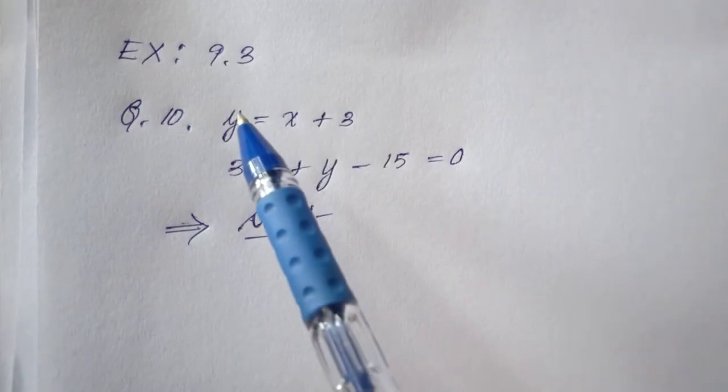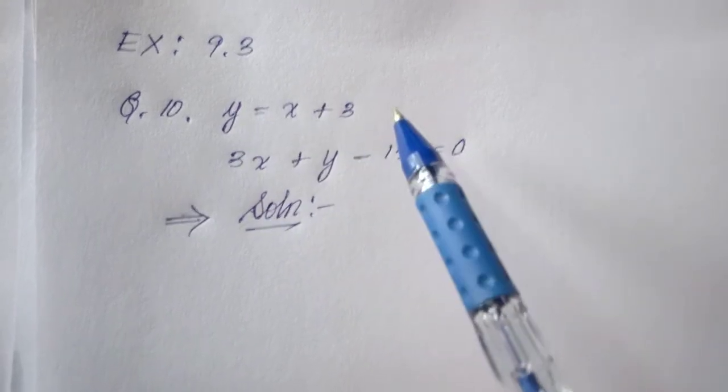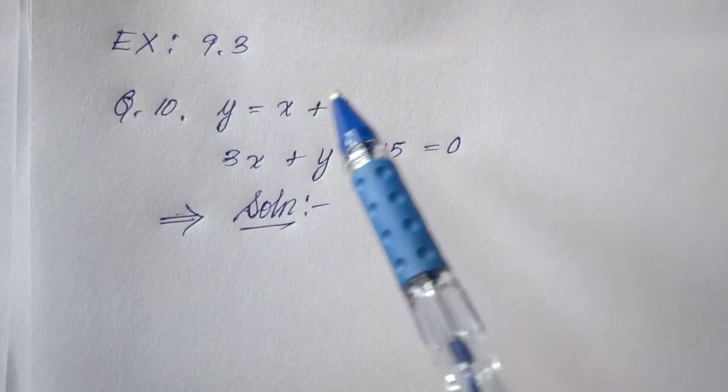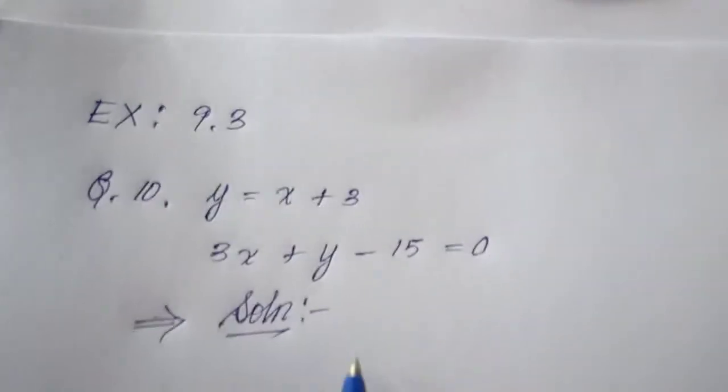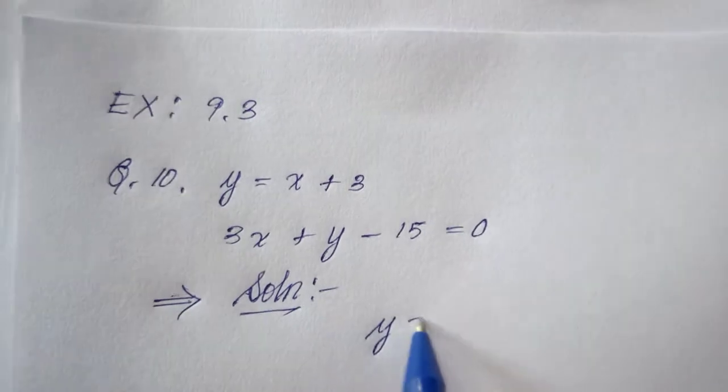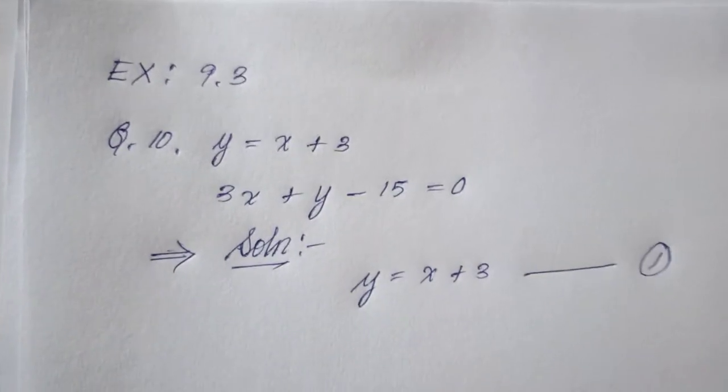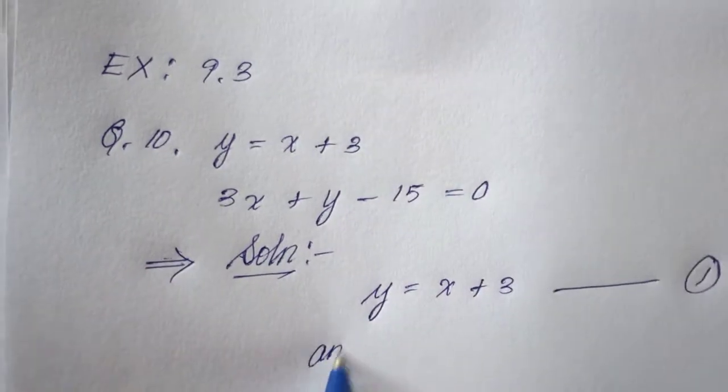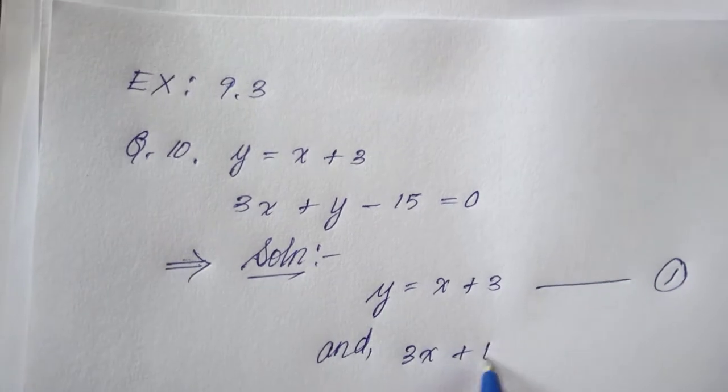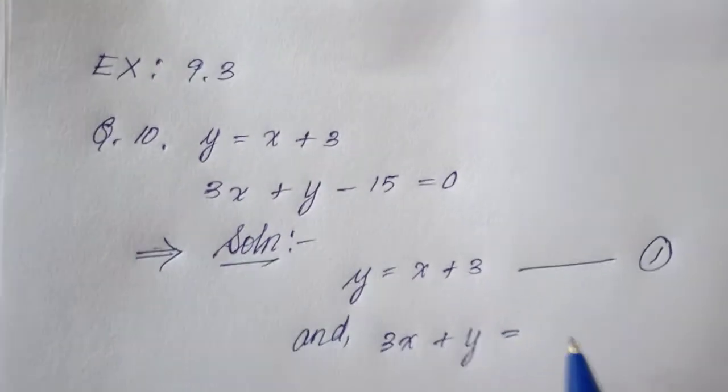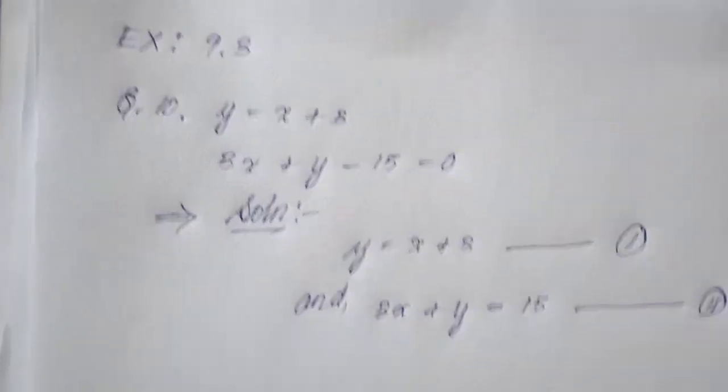Because here we have given that the value of y is already given. y is equal to x plus 3. So that means instead of y, I can use x plus 3. So I will take this as a hint. I will put this way: y is equal to x plus 3 as equation 1. So I have to arrange equation 2, and equation 2 is 3x plus y equal to 15.